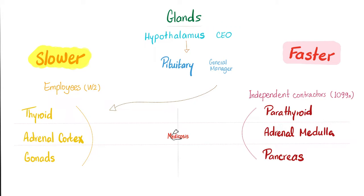Who's the CEO of the endocrine system of your body? The hypothalamus. Who's the general manager under the CEO? The pituitary. There are three glands that listen and obey the pituitary — we'll call them the employees: thyroid gland, adrenal cortex, and gonads. Their hormones are mostly lipid-soluble, i.e., slow in action. However, there are three glands that do not care about the pituitary — the independent contractors: parathyroid glands, adrenal medulla, and the endocrine pancreas. These hormones are fast.